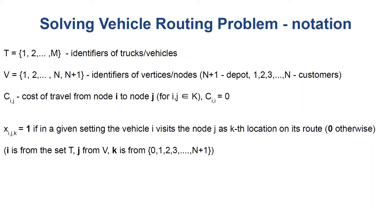Let's introduce the following notation. Let T be a set of identifiers of M vehicles, and V be a set of identifiers of N customers and one depot, which is denoted as N plus 1. Therefore, we have N plus 1 identifiers in the set V.